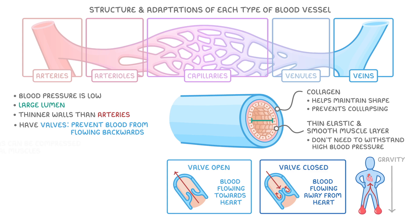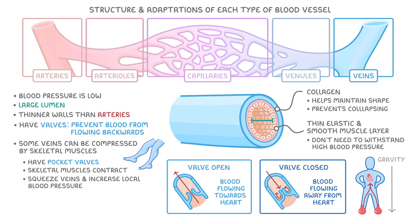Because of their thin walls, some veins can be compressed by the skeletal muscles that surround them, like in our legs. These type of veins have pocket valves that only allow blood to flow in one direction. When the skeletal muscles contract, they squeeze the veins and increase the local blood pressure, which pushes blood towards the heart. After the blood has moved through them, the pocket valves then shut to prevent backflow.